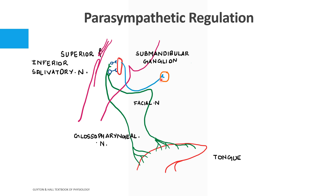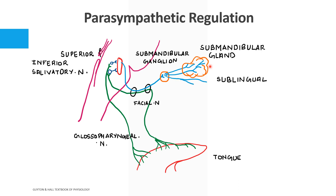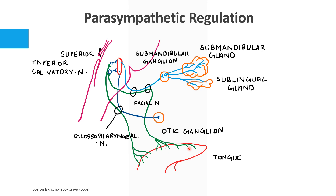From the facial nerve, impulses are passed to the submandibular ganglion, which in turn innervates the submandibular gland and the sublingual gland. So from the superior and inferior salivary nucleus, impulses go to the submandibular ganglion and from there to the submandibular and sublingual glands. For the parotid gland, the branch passes through the glossopharyngeal nerve to the otic ganglion, and from there it innervates the parotid gland. So for submandibular and sublingual glands it is via the submandibular ganglion, and for the parotid gland it is via the otic ganglion.